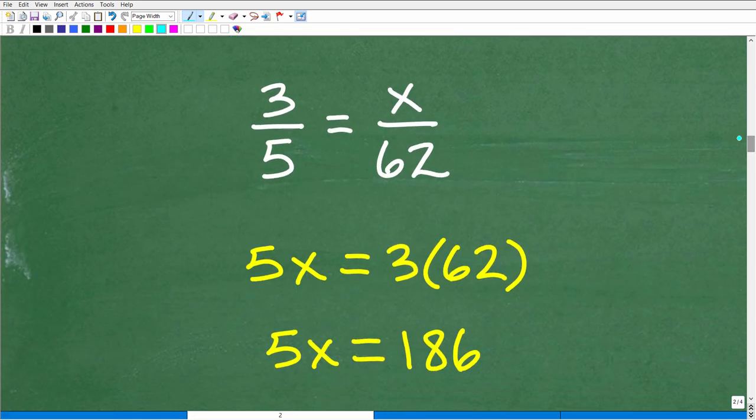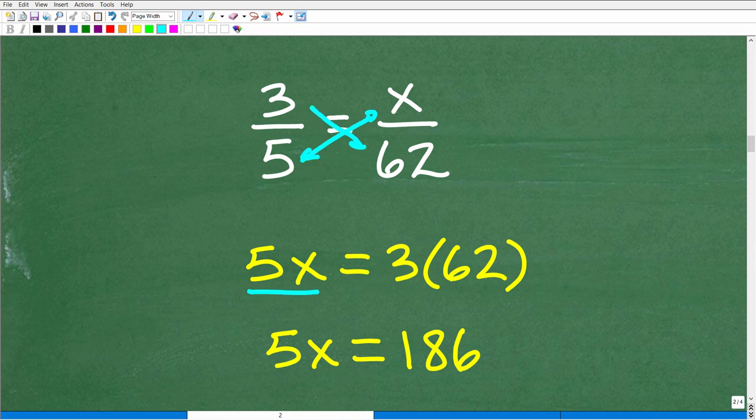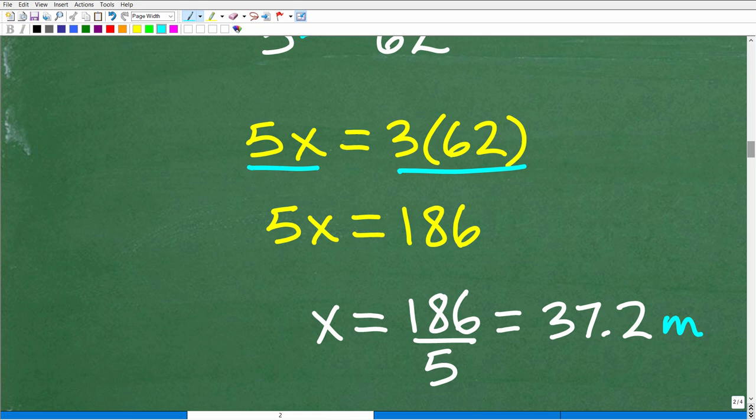So again, we're going to be using the cross product, so 5 times x is 5x. And that's going to be equal to 3 times 62, so we'll write it that way. So 3 times 62, we can go into our lovely calculator, is 186. So 5x is equal to 186. To solve for x, I'm simply going to divide both sides of the equation by 5, and 186 divided by 5 is 37.2.